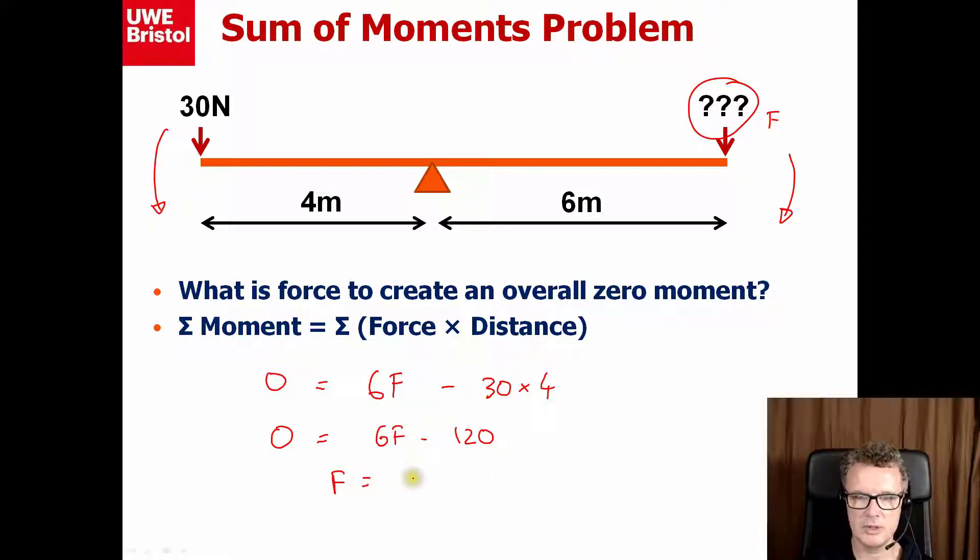will be F equals 20 Newtons. Doing that in my head, 20 times 6 is 120, and 120 on the left side. So there you go, we need to apply a force of 20 Newtons on this side to make this thing nice and balanced.